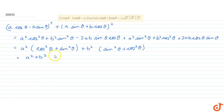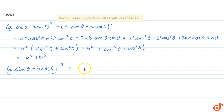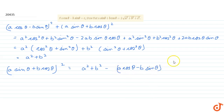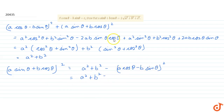Therefore, now consider the left-hand side: a sin theta plus b cos theta whole square equals a square plus b square minus a cos theta minus b sin theta whole square. Using this result, this will be equal to a square plus b square minus...